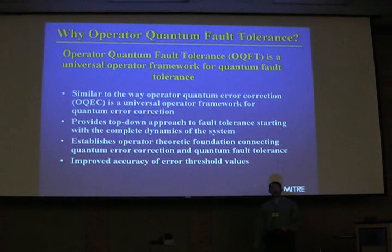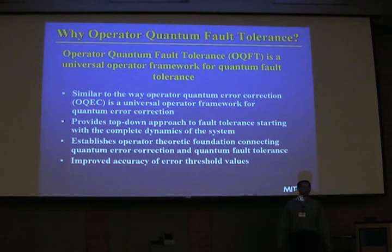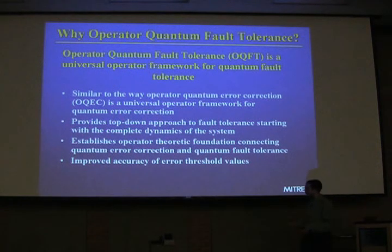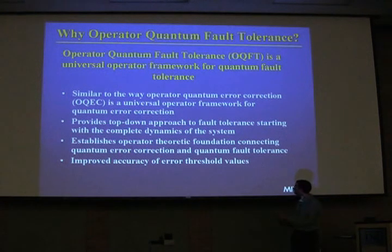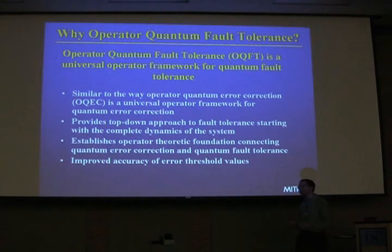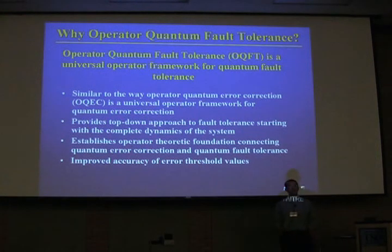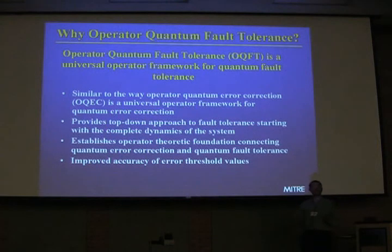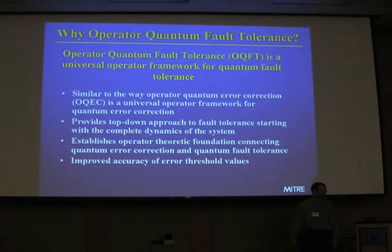Our framework, which makes use of super operators, we call operator quantum fault tolerance. Why would we want to formulate fault tolerance in such a way? First, from the perspective of representation, an operator formalism of fault tolerance would act towards quantum fault tolerance just as operator quantum error correction acts towards quantum error correction. It provides a top-down approach starting with system dynamics, establishes an operator theoretic foundation connecting error correction to fault tolerance, and we hope it will give improved accuracy of error thresholds.